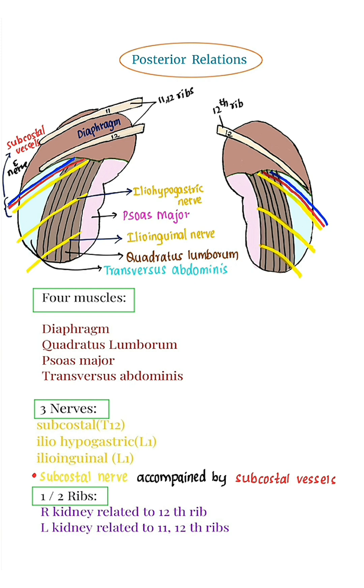Posterior relations are the same for both the kidneys, except that the right kidney is related to one rib, and the left kidney is related to two ribs. Four muscles.